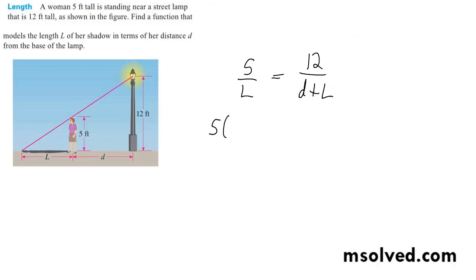So cross multiply, we get 5D plus L is equal to 12L. Distribute: 5D plus 5L equals 12L.